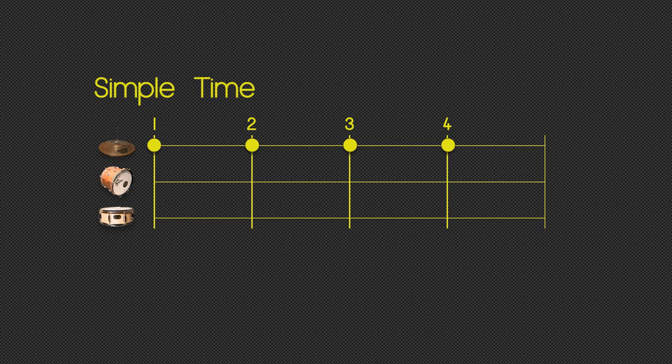If we take each beat and divide it by 2, we end up with 8 inner beats. We'll put a hi-hat on each of those inner beats: 1 and 2 and 3 and 4. That is simple timing because we've divided by 2.